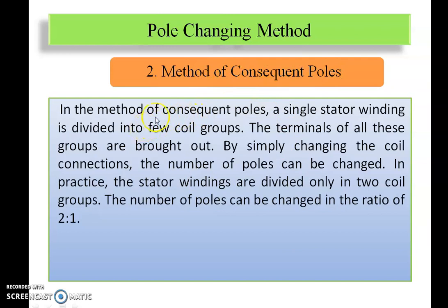In the method of consequent poles, a single stator winding is divided into few coil groups. The terminals of all these groups are brought out. By simply changing the coil connections, the number of poles can be changed. In practice, the stator windings are divided into two coil groups, and the number of poles can be changed in the ratio of two to one.